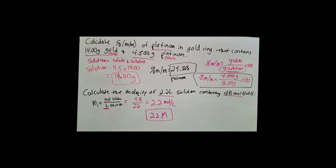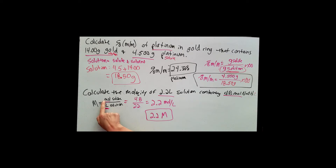Molarity is the most common form of concentration used in chemistry. A lot of reagent bottles have molarity on them — for example, a hydrochloric acid bottle might say 0.3 molar. We use this calculation to figure that out because in chemistry we often use moles and work with either liters or milliliters.